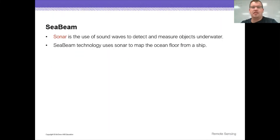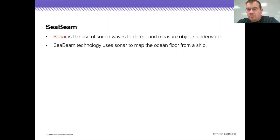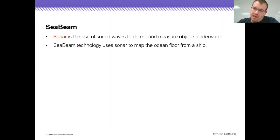Sea beam uses sonar — sound waves — to detect and measure objects underwater, and to look at the ocean floor from a ship. This is important: if you're a captain of a ship, you'd like to know what's below you, so if rocks are getting close you know where you are.